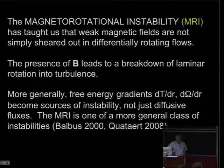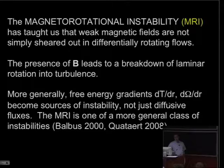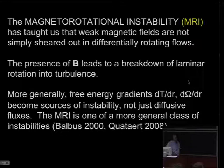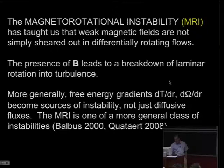More generally, what the magnetic field does is tell the fluid about the free energy gradient. Free energy gradients - the temperature gradient, the angular velocity gradient - become sources of instability, not just diffusive fluxes. The MRI is really one of a more general class of this type of magnetic instability, including some very interesting work that Elliott Quatert has done recently on the role of thermal fluxes in the presence of weak magnetic field.